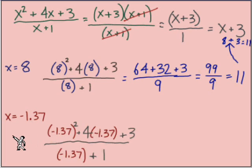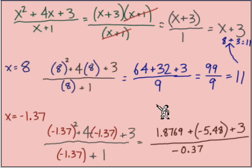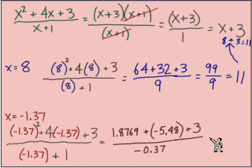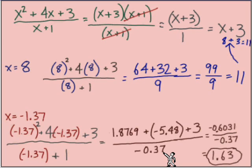We're going to evaluate this expression when x equals negative 1.37, plugging that in place of each x. Following order of operations, there's our negative 1.37 squared, there's the product with 4. Let's slide all this over and make room to finish the addition in the numerator: a negative 0.6031. Our denominator is negative 0.37, that final division equals 1.63.